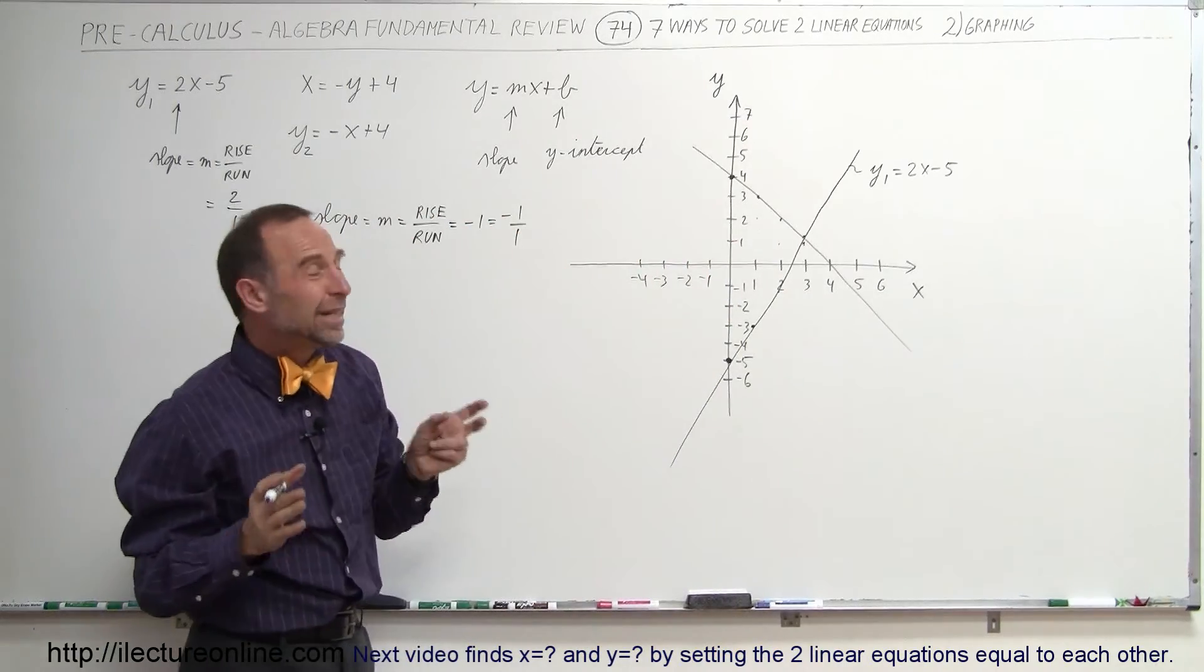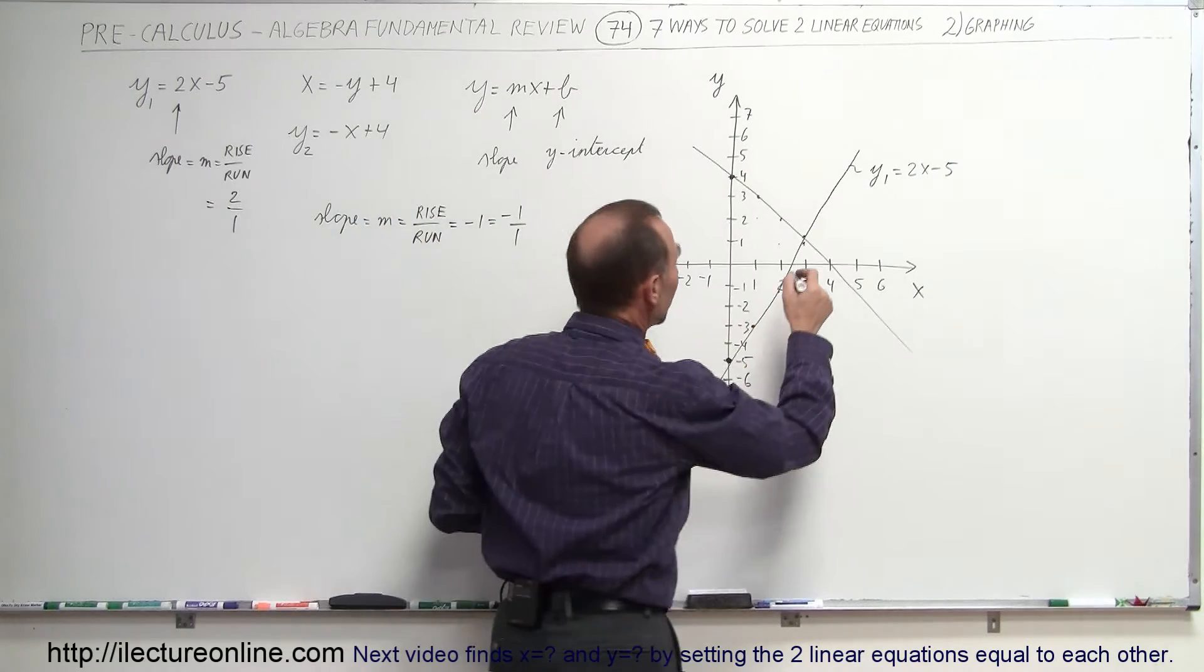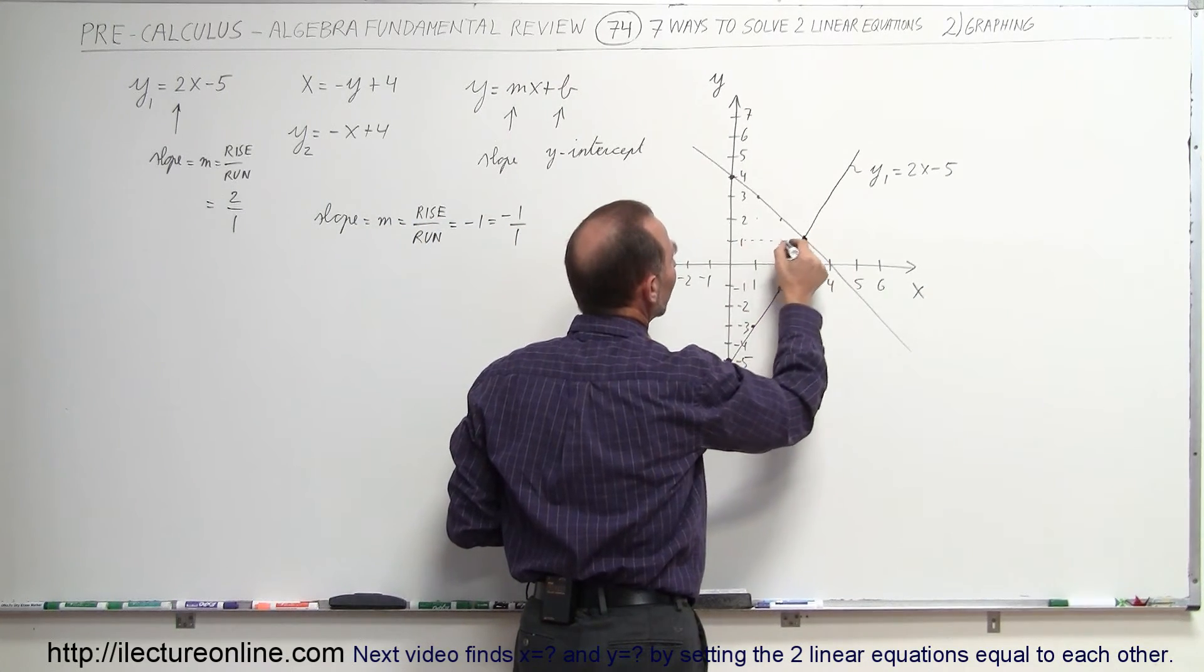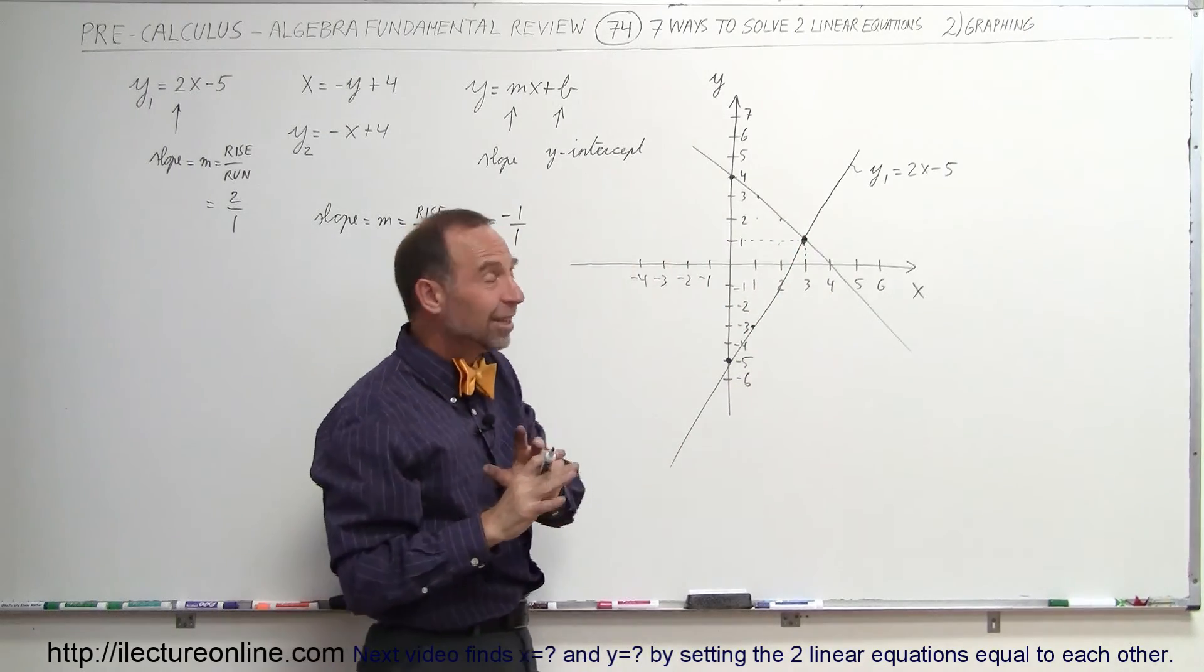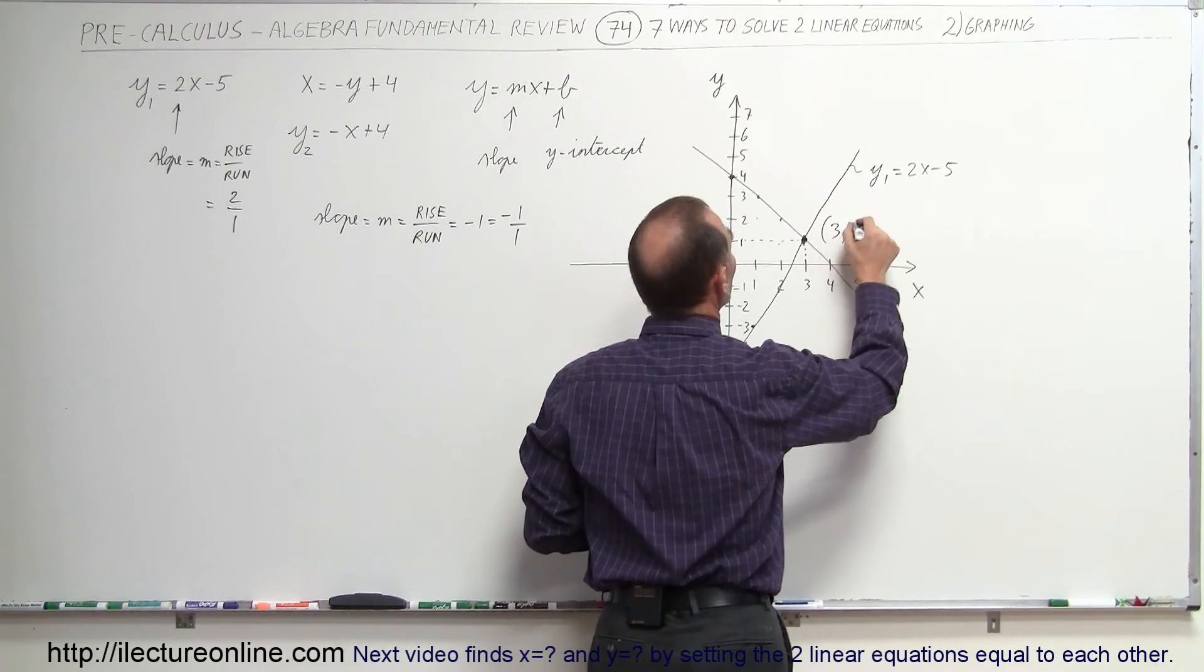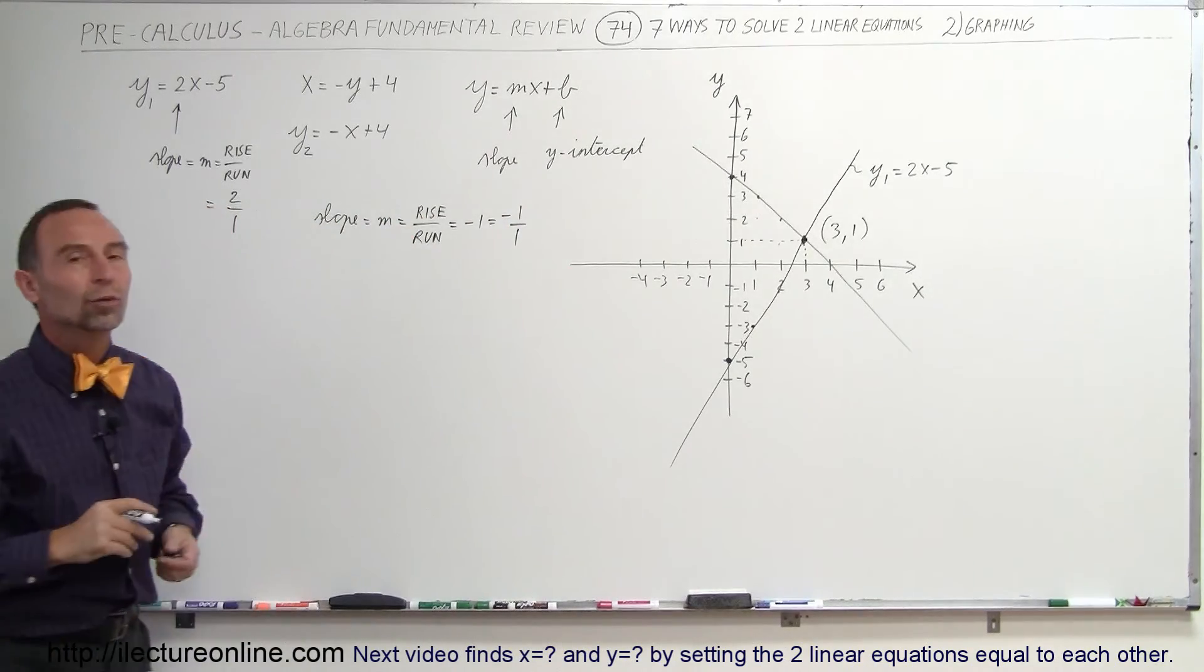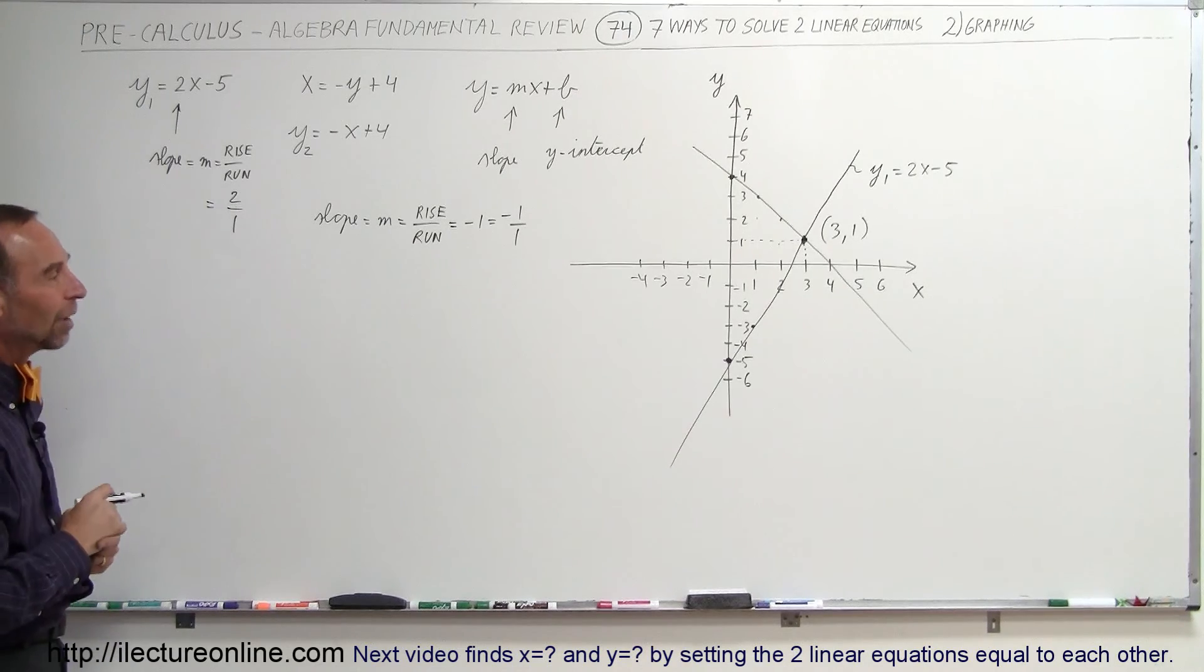Now, notice that we didn't get the exact spot where they meet, but it looks close enough to say that the y-value looks like it's a positive 1, and the x-value looks like it's a positive 3. So it's either exactly that or very close to that number. We could say that the answer is probably 3 and 1. And that would be the solution to these two equations, the solution to those two linear equations, the place where the two cross.